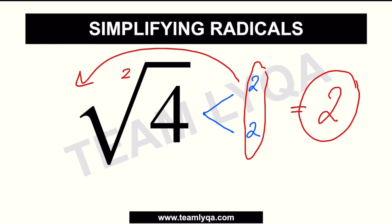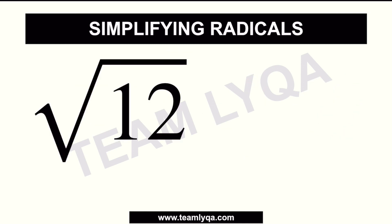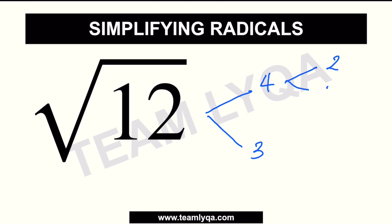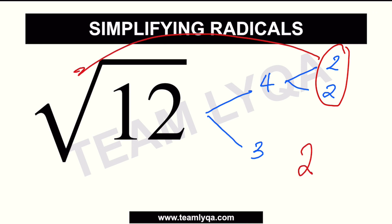Now, when we face a problem like the square root of 12, we still factor it. Since it's not a perfect square, we split it into its factors: 4 and 3, because 4 times 3 is 12. The 4 can be broken into two 2s, but the 3 can't be factored further — it's a prime number. Since we can take out the pair of 2s from under the radical, the answer is 2, with the remaining 3 left under the radical. So we get 2 square root of 3.